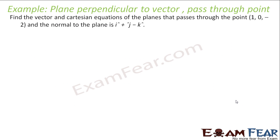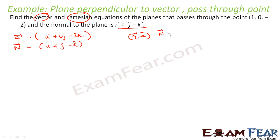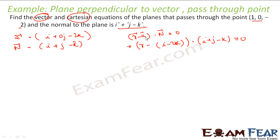Let's take an example. Find the vector and Cartesian form of the equation of the plane passing through point A = (1, 0, −2), so a-vector is i + 0j − 2k, and normal to the plane is i + j − k. The vector form is: (r − a)·n = 0, which gives r minus (i − 2k), dot (i + j − k) = 0. Here a was i − 2k and n is i + j − k.